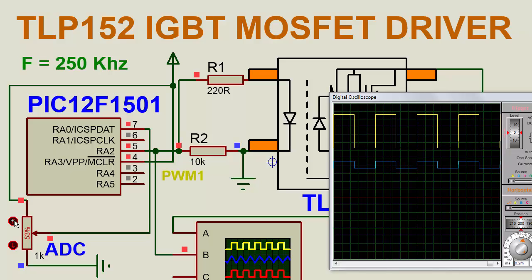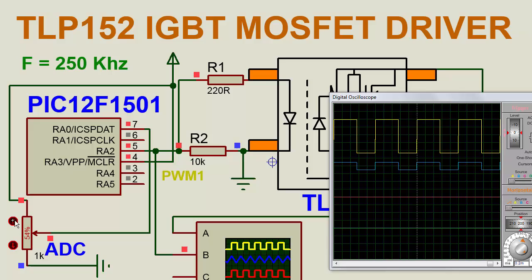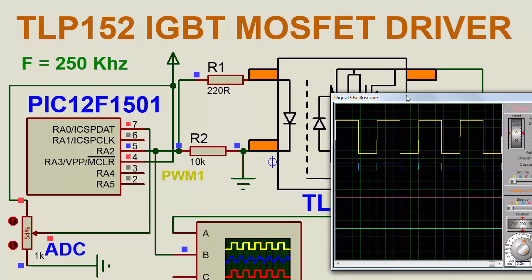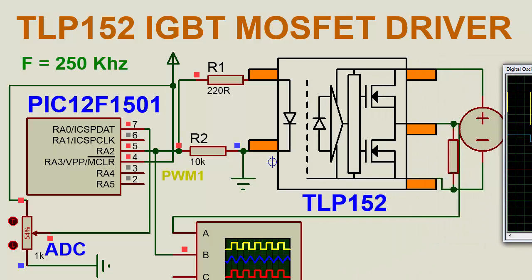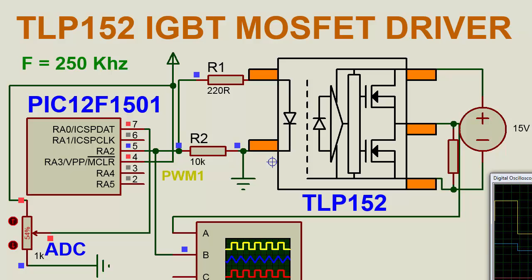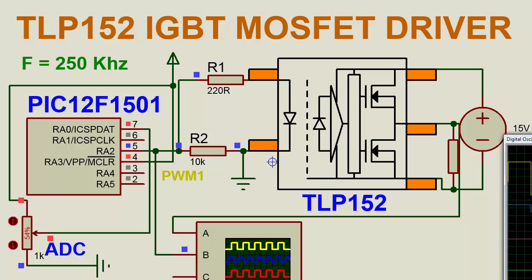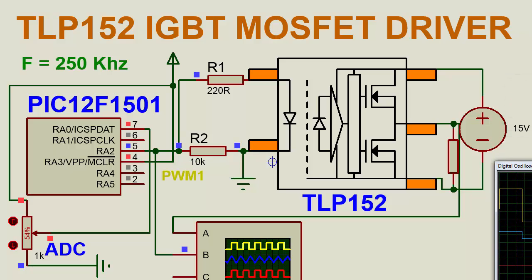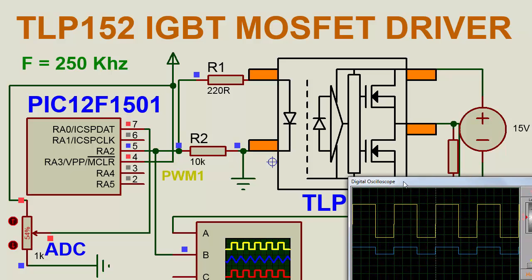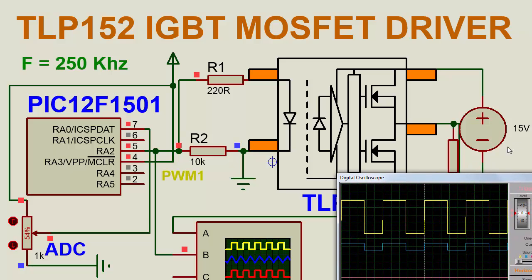The blue color square wave is the PWM output and the yellow color is the output of TLP152. This 15V is the isolated power supply, and you can see this is also acting as a voltage translator.